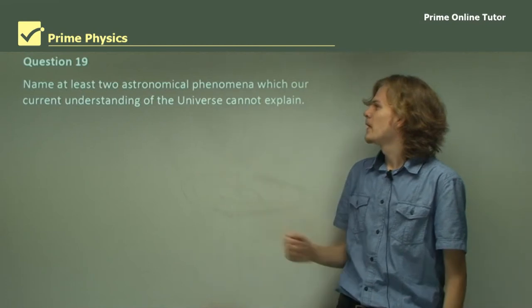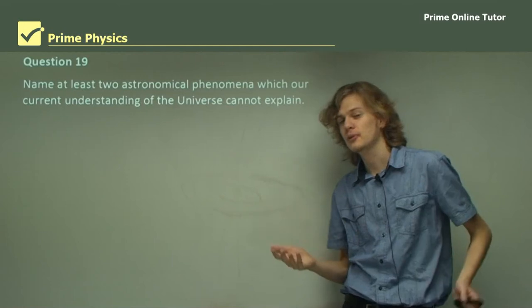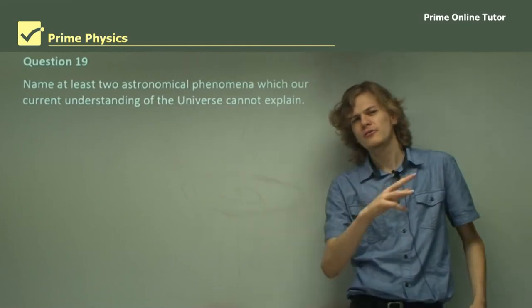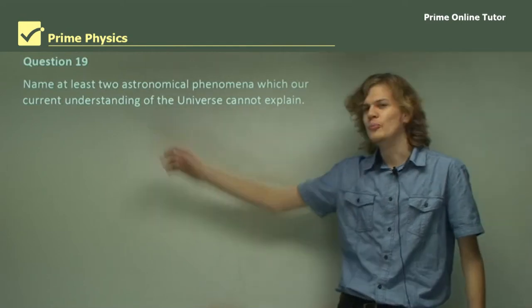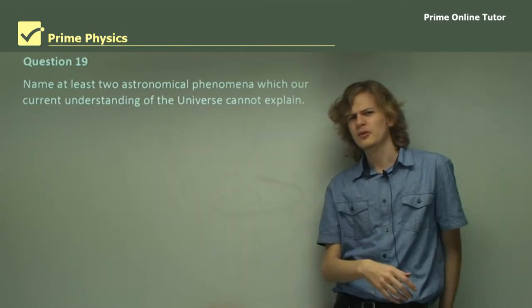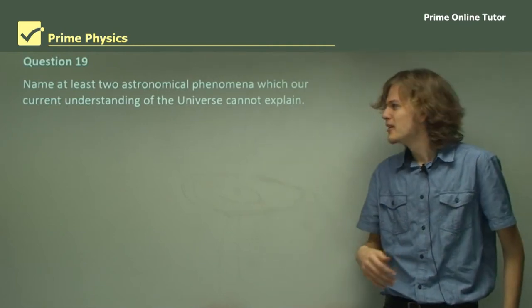Question 19. Name at least two astronomical phenomena which our current understanding of the universe cannot explain. I had a few of these right near the end of the presentation. At least two means that we can list more. And so I'm going to list about four just to make sure that my answers cross over with yours.